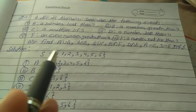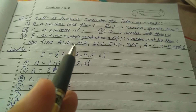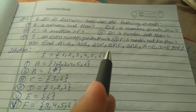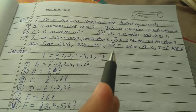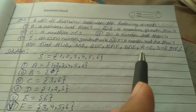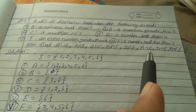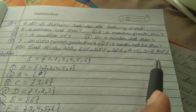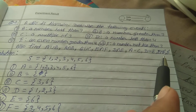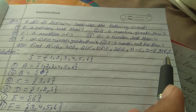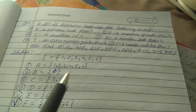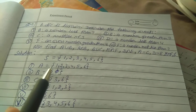Also find A union B, A intersection B, B union C, E intersection F, D intersection E, A minus C, D minus E, E intersection F dash, and F dash.